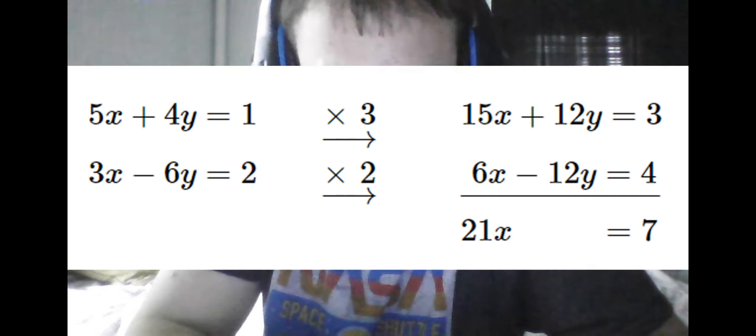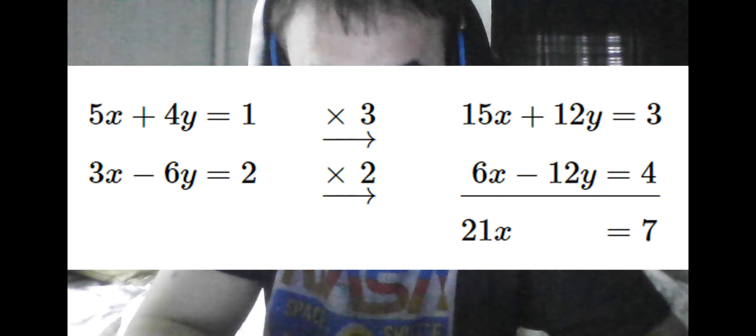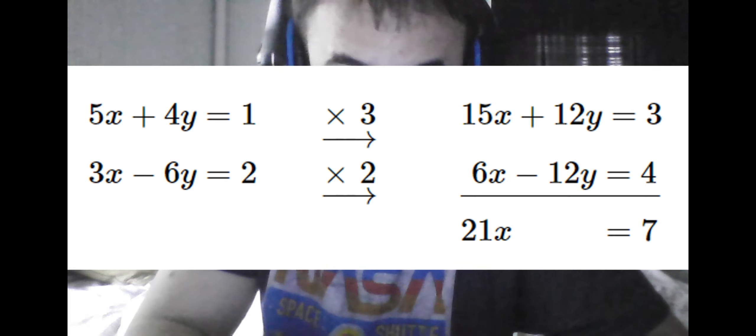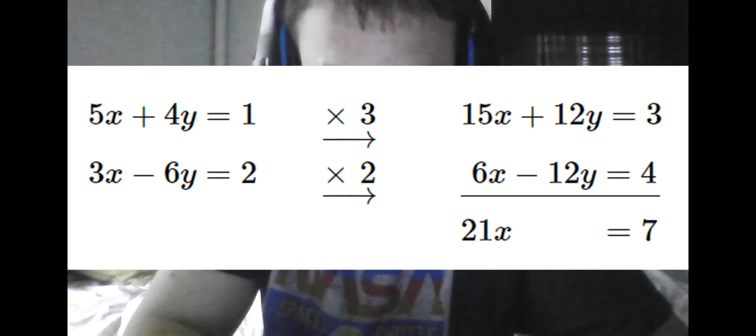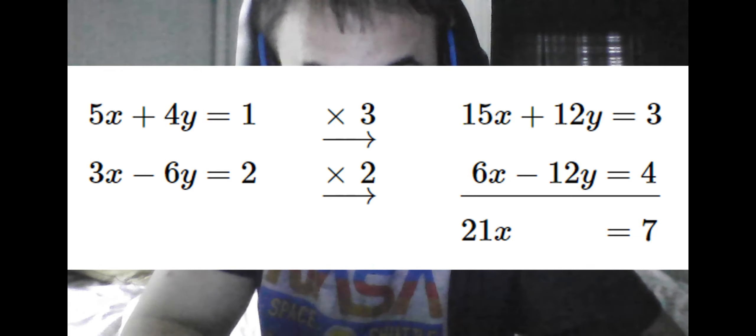In particular, if we are given this system, we see that there is no convenient way to get y or x in terms of the other variable. So the method of elimination seems the more convenient candidate. When we do this, we see 4 and 6 have a more easy to find least common multiple than 5 and 3. So we multiply both equations by the factor not already given by the coefficient of y. And then add the equations so that the y's cancel out. We get 21x equals 7, and so x must equal 1 third.